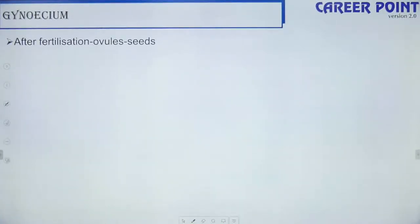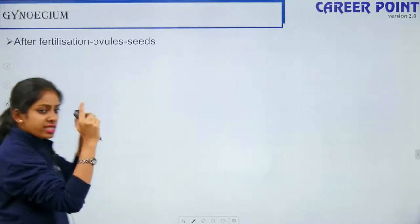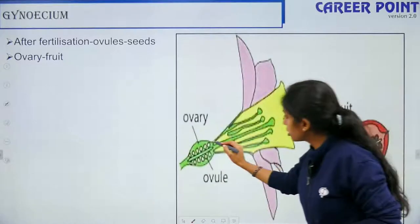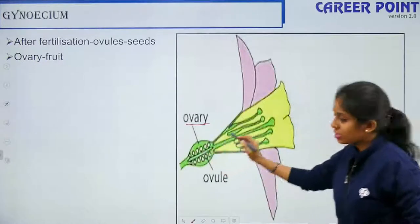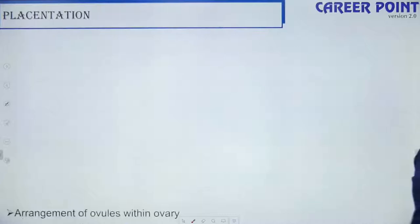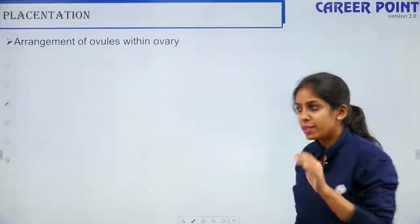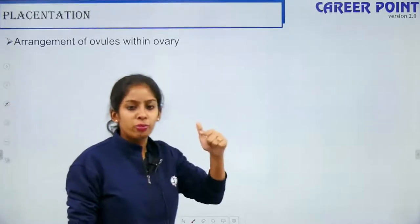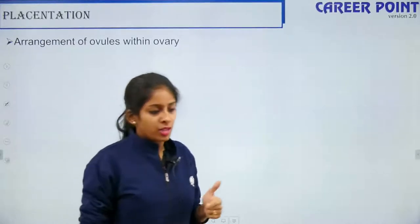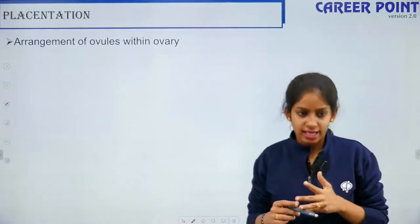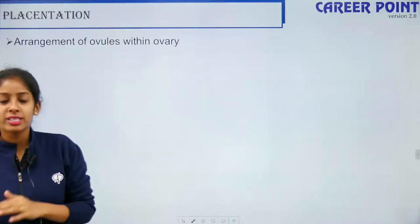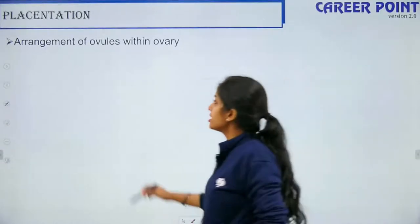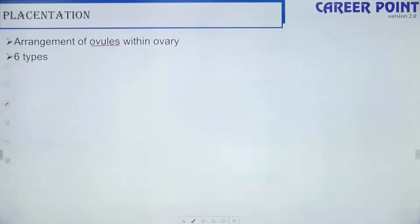After fertilization, ovules become seeds and the ovary becomes the fruit. Now we are coming to placentation. In the previous class we also spoke about estivation and the position of the ovary — inferior, superior, and half-inferior — that is hypogynous, epigynous, and perigynous. Now talking about placentation — this is the arrangement of ovules within the ovary. There are six types: marginal, axial, parietal, basal, central, and free central.